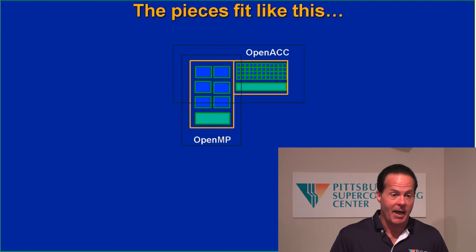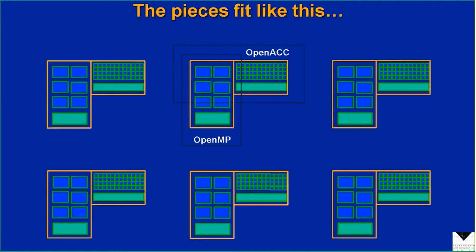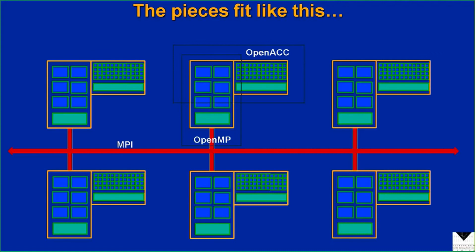If that's not quite enough and you need to run 10,000 or 100,000 times faster, then there's no alternative but to buy a whole lot more nodes — building yourself a cluster, or if you've got a lot more money, a supercomputer like Bridges. You buy a whole lot more of those nodes, connect them together with a network, and use MPI to program things across that network. So those are the three pieces of programming that make up all of modern parallel programming: OpenMP for multiple cores, OpenACC for accelerators, and MPI for distributed nodes. On the big machines, you combine all three techniques together.